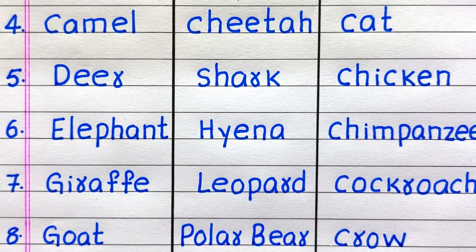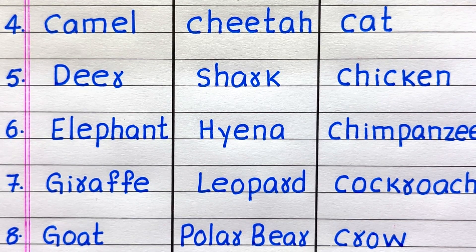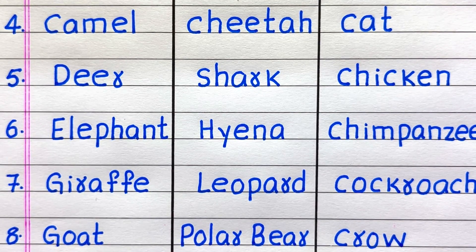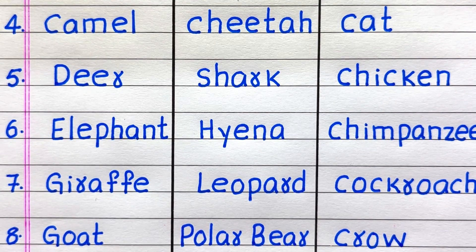4th name of a herbivore is Camel. 5th Deer. 6th Elephant. 7th Giraffe. 8th Goat. 4th name of a carnivore is Cheetah.